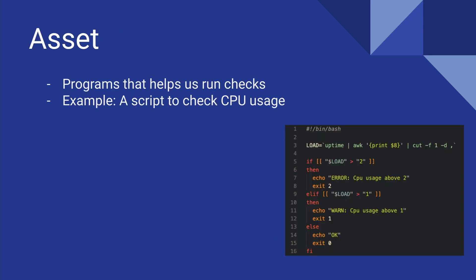The next term is an asset. Checks need some sort of scripts to actually run the commands and determine the state of the system. For example, for a check to monitor CPU usage, we need a script that can do this. I have a simple bash script here — we use the uptime command and take the eighth column, which is the load average in the last one minute, and remove the comma to get the actual load average value.